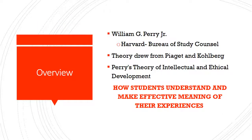To begin, Perry's Theory of Intellectual and Ethical Development was created by William G. Perry Jr. Perry was working at Harvard University where he served as Bureau of Study Council. Perry and his colleagues drew a lot of their work from Piaget and Colbert in their original studies surrounding cognitive development. Perry's Theory focused on how students understand and make effective meaning of their experiences.